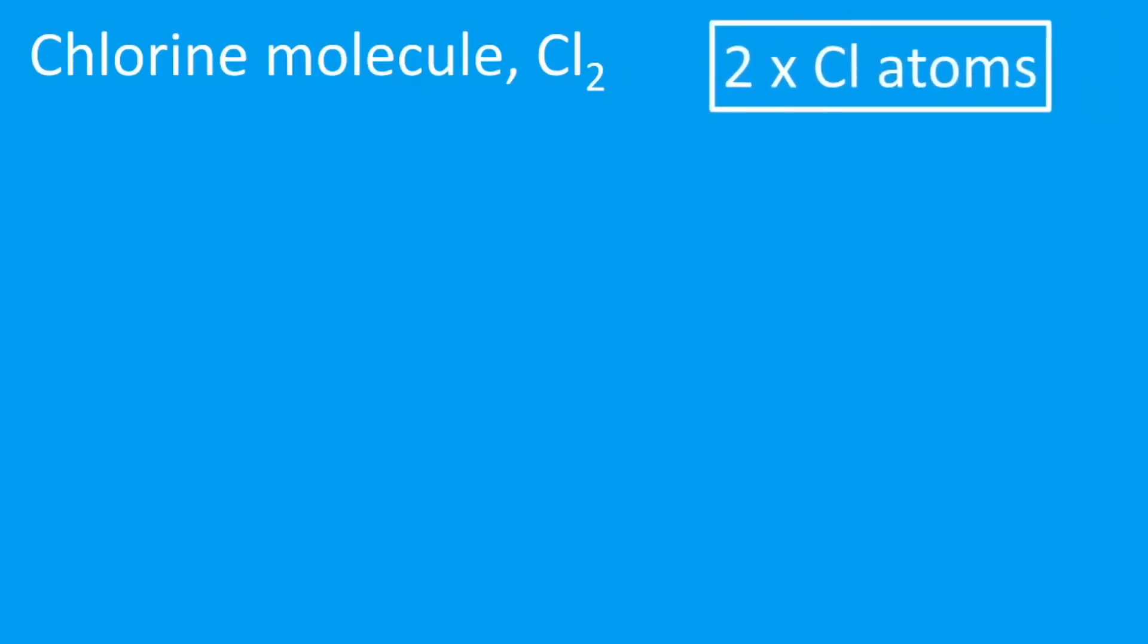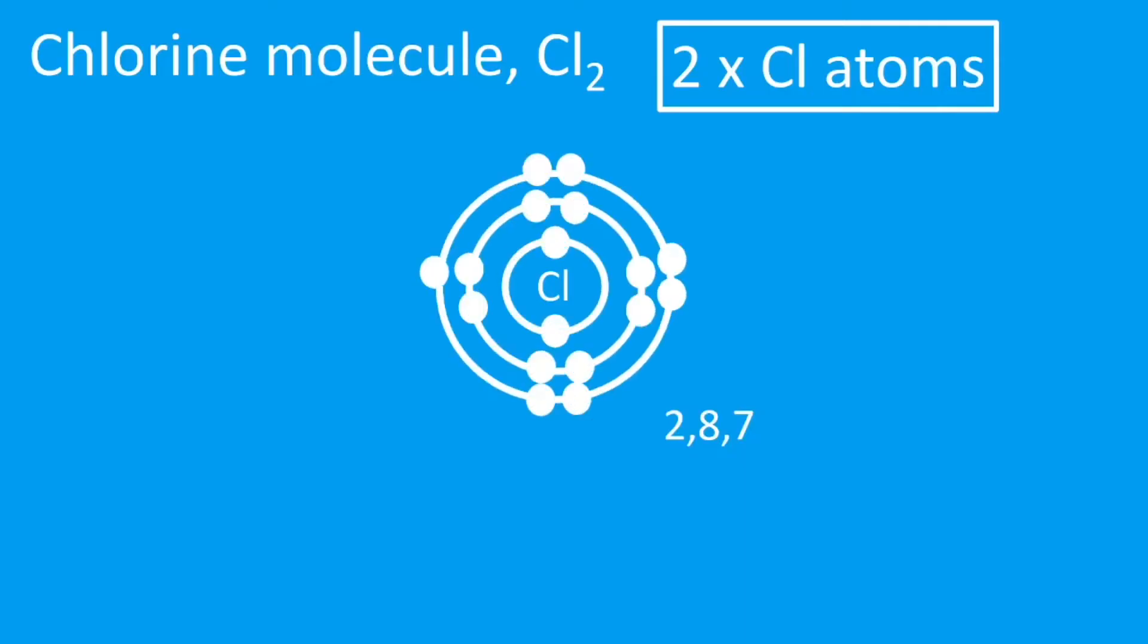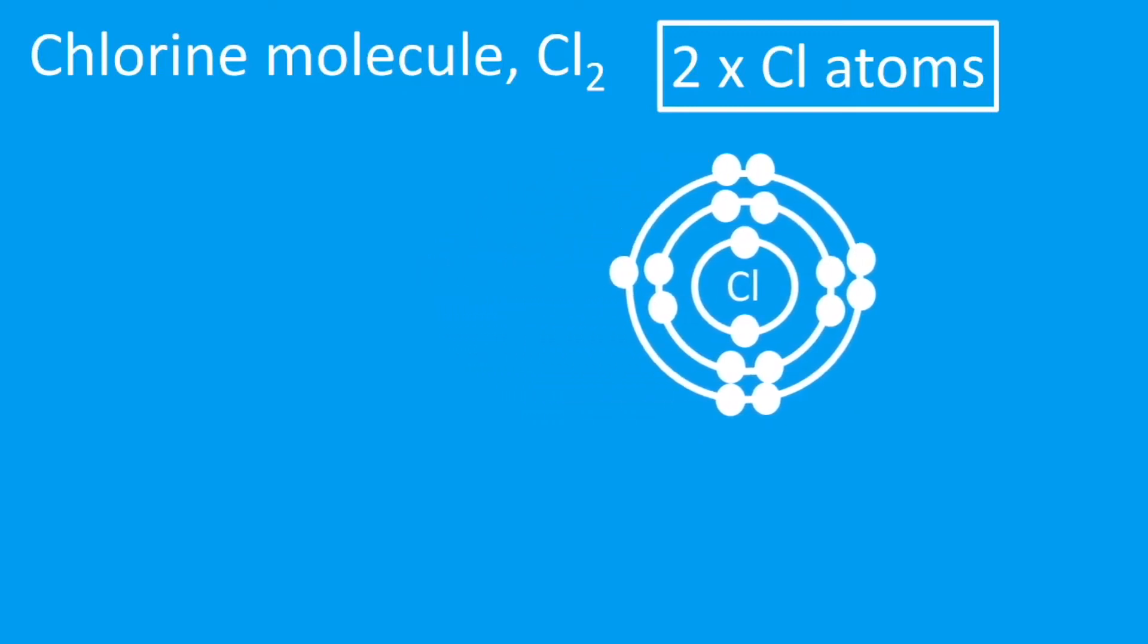Let's have a look at a chlorine molecule, Cl₂. This means there are two chlorine atoms, so we're going to draw the two chlorine atoms. Chlorine is in group seven, electron configuration 2,8,7, and there we go. And now because there are two chlorine atoms, I'm going to draw a second chlorine atom.